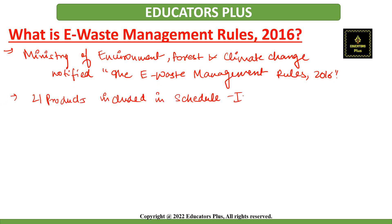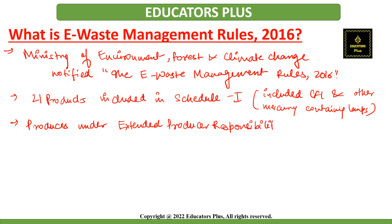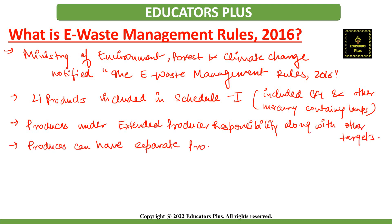Under the 2016 rules, 21 products were included, including CFL and other mercury-containing lamps. For the first time, the rules brought producers under extended producer responsibility along with targets, making producers responsible for the collection and recycling or exchange of e-waste. Various producers can also form separate producer responsibility organizations to ensure collection and environmentally sound disposal of e-waste.